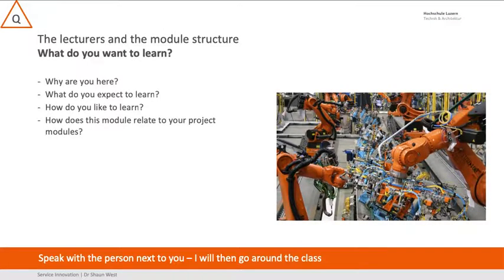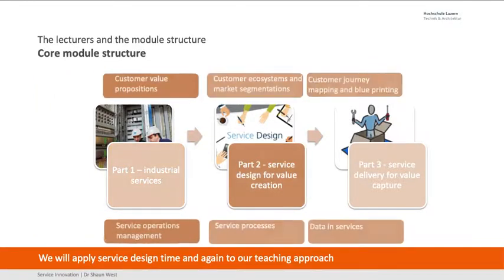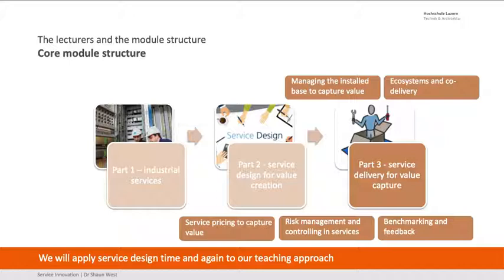I'm going to ask you what you want to learn, because to me that's useful. I want to know what you want to learn so that by the end of it we meet your learning objectives as well as what I want to teach. Hopefully by the end you'll understand that robots won't take over the world but we need people to interact with them and deliver the services these things need. The core module: Part 1 is industrial services and contextual issues, Part 2 is designing services and value creation, and Part 3 is trying to capture value. We use service design time and time again in our teaching.